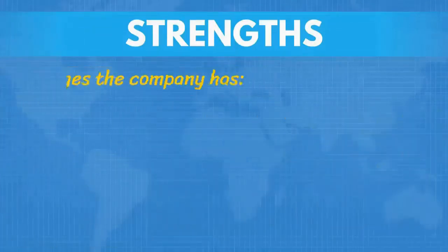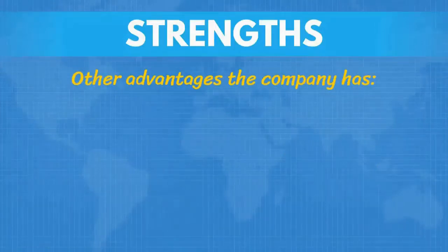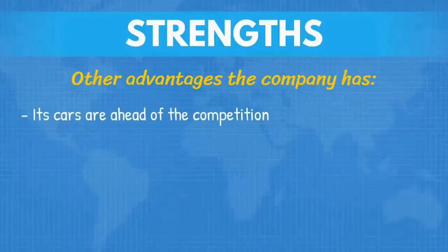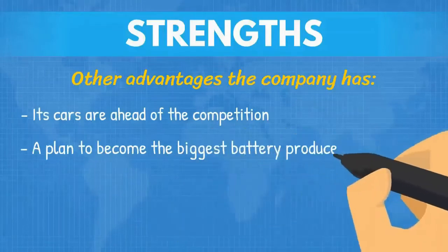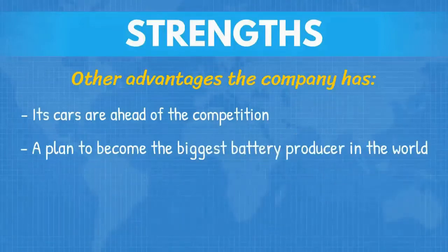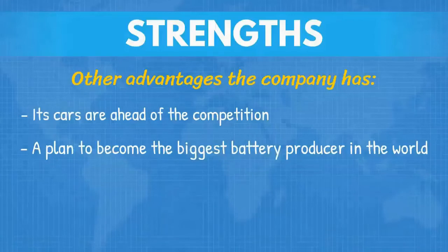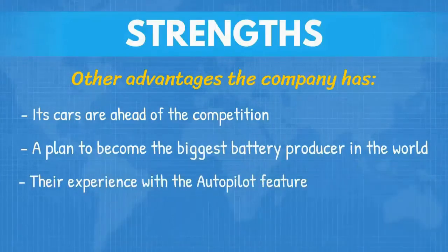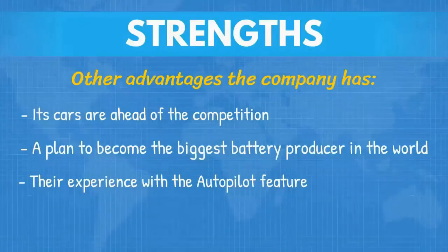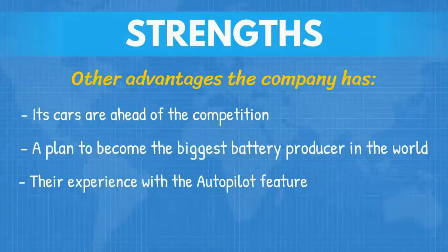Along with that, we can mention several other important advantages the company has. Their cars are ahead of the competition in terms of battery range, and Tesla has extensive experience with battery production and recharging. Tesla has put in motion a plan that would make it the biggest battery producer in the world — the company intends to construct several gigafactories: three in the US, one in Europe, and one in Shanghai — resulting in a significant cost advantage against competitors who outsource battery production. Tesla's Autopilot feature has been operational for several years now, accumulating more and more data and testing in real-life conditions. In the future, as autonomous vehicles become prevalent, Tesla's experience with Autopilot would be extremely valuable.